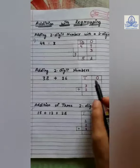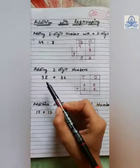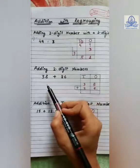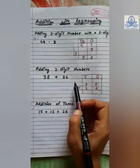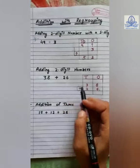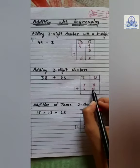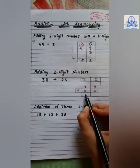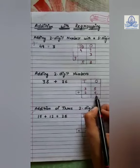Now, adding two-digit numbers. For example, thirty-eight plus twenty-six. Here, you can see both are two-digit numbers. So, we have to arrange the numbers first at ones and tens place. Three at tens, eight at ones — that is thirty-eight. Two at tens place and six at ones place — that is twenty-six.